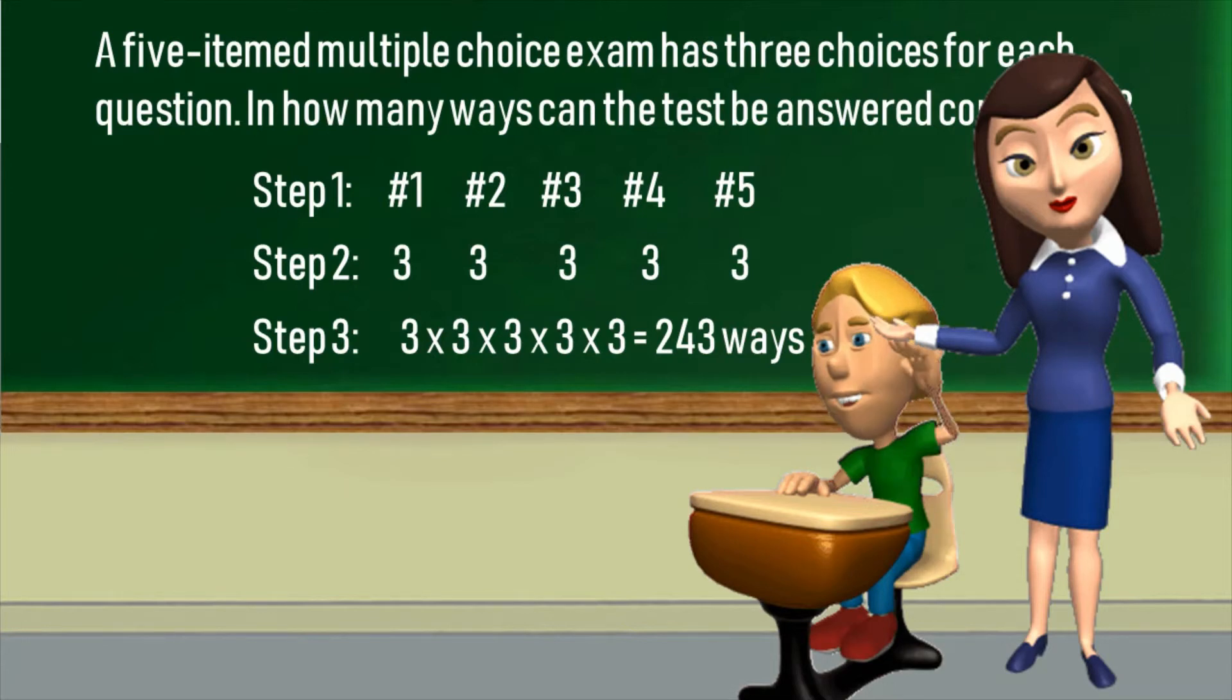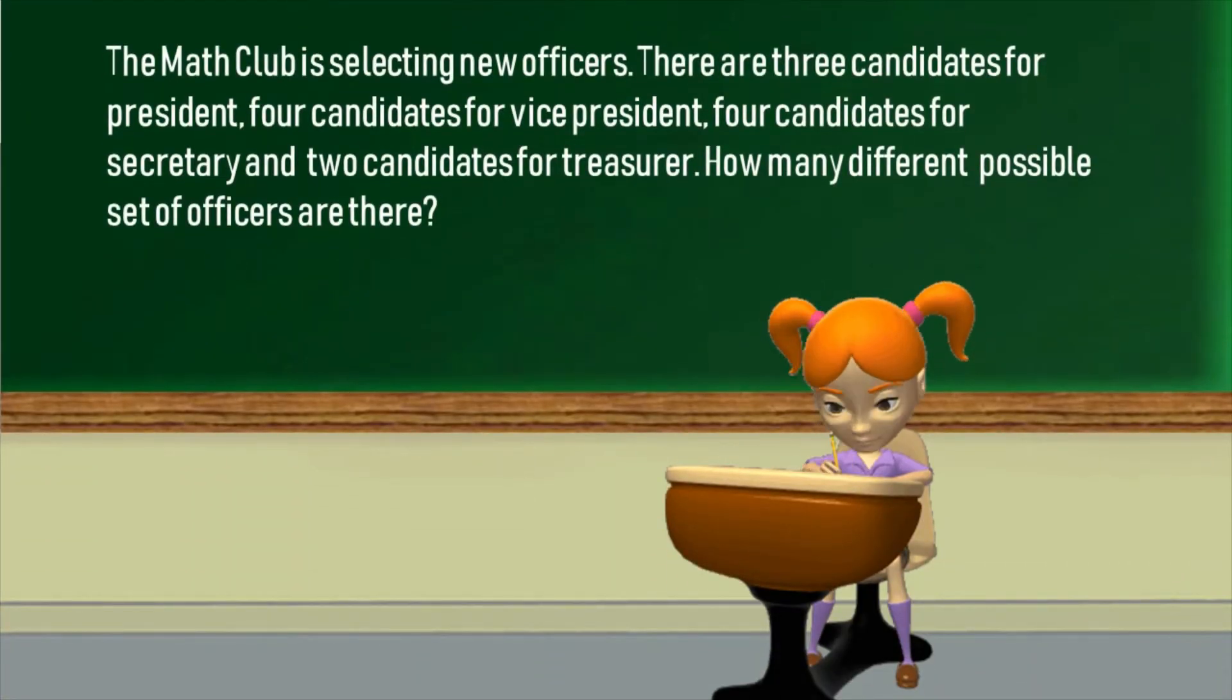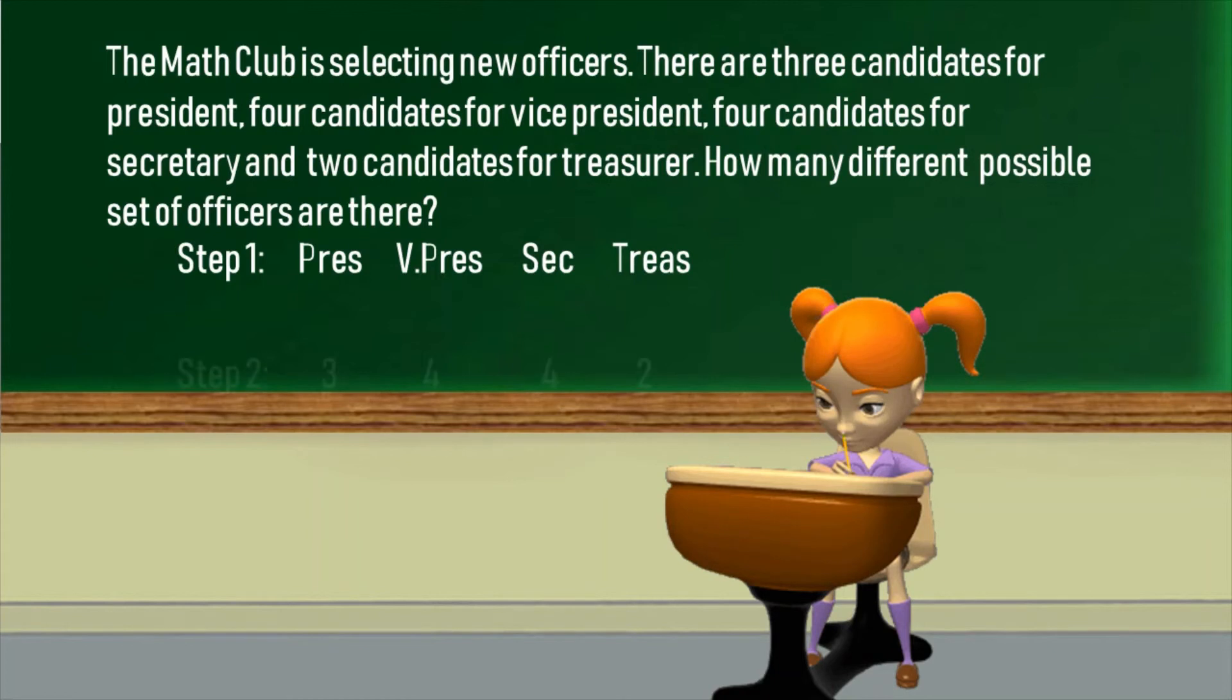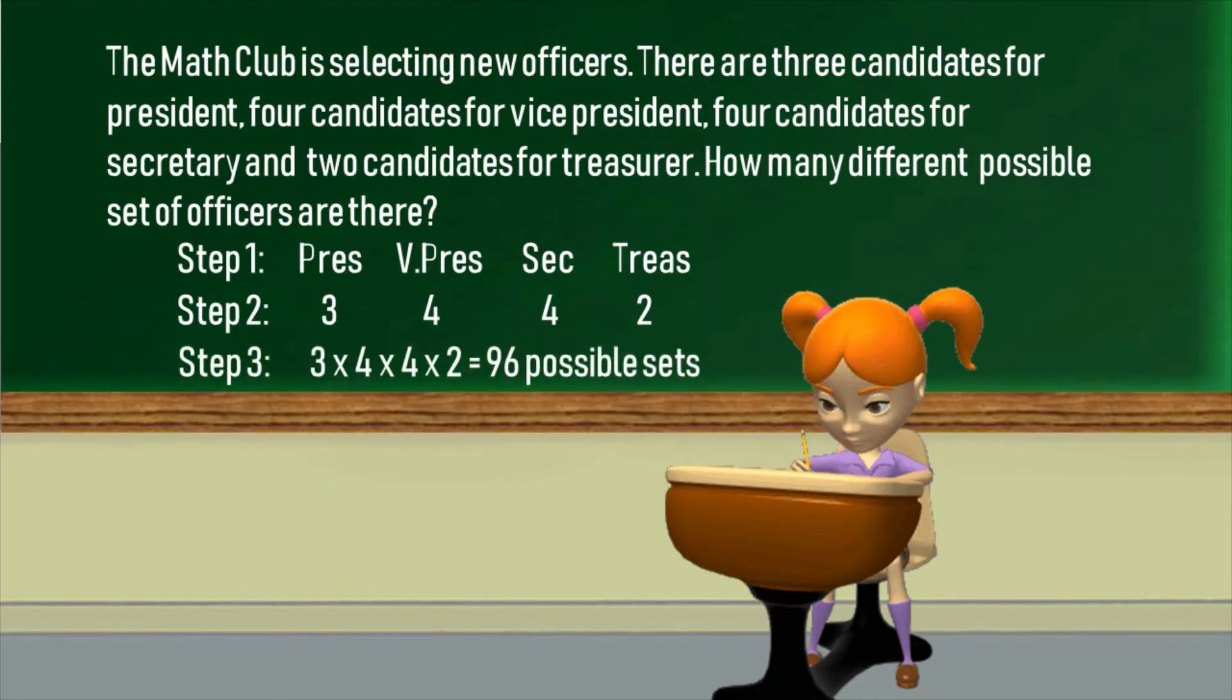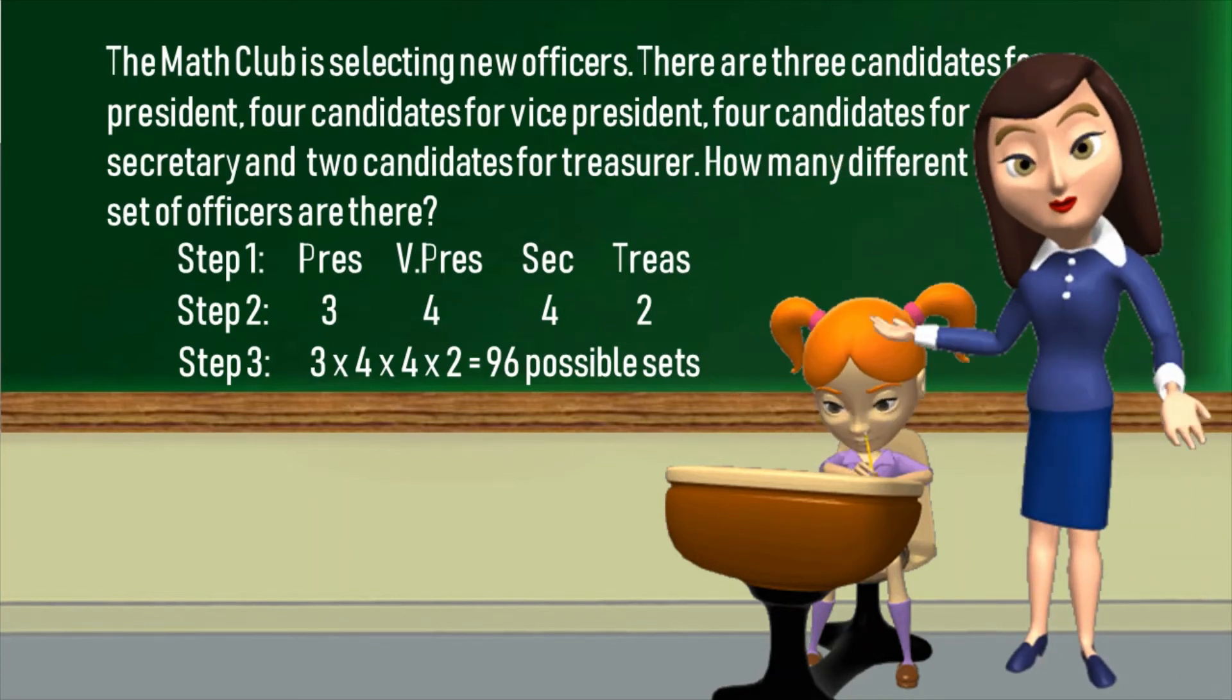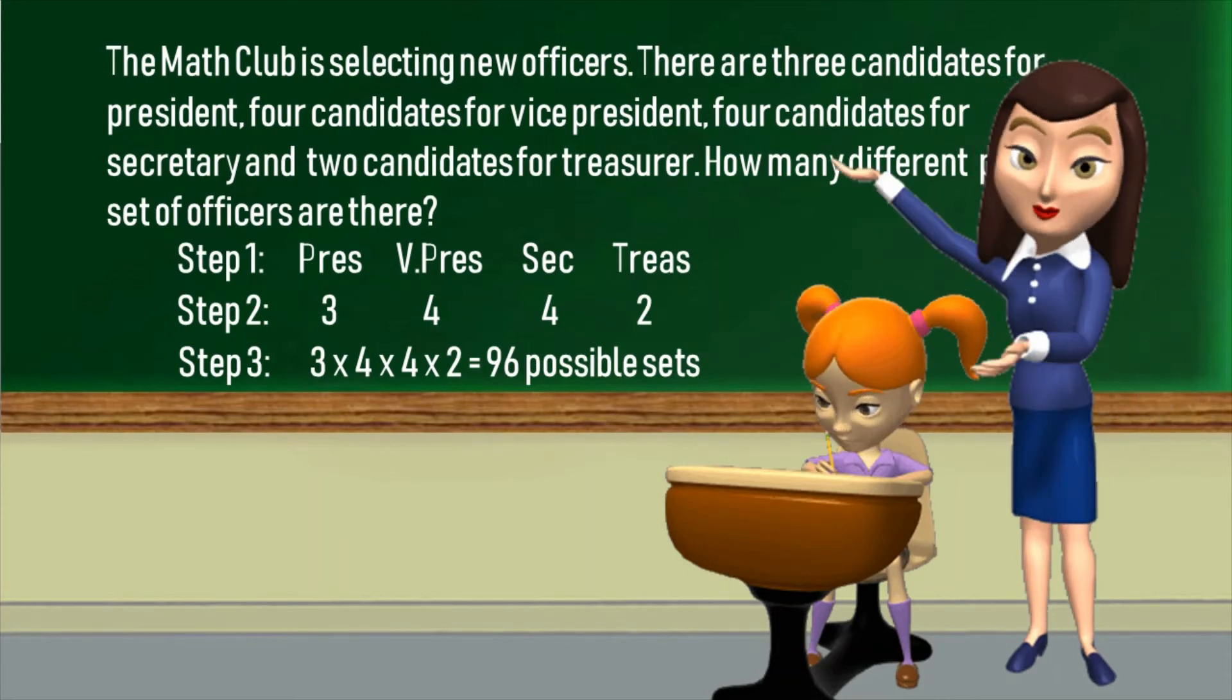And let's have our last presenter. Problem: The math club is selecting new officers. There are three candidates for president, four candidates for vice president, four candidates for secretary, and two candidates for treasurer. How many different possible sets of officers are there? In step one, there are four positions to be filled up: the president position, the vice president, the secretary, and the treasurer position. In step two, there are three candidates for president position, four for vice president, four for secretary, and two candidates for treasurer position. In step three, multiplying them all will give 96 possible sets of officers, teacher. Perfect. You all really understand our discussion. Give yourselves a round of applause.